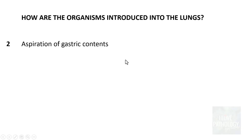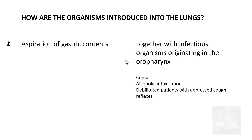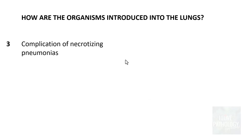The second important route is aspiration of gastric content, which often carries infectious organisms originating in the oropharynx. Again, the same predisposing conditions apply: coma, alcoholic intoxication, and debilitated patients with depressed cough reflexes.